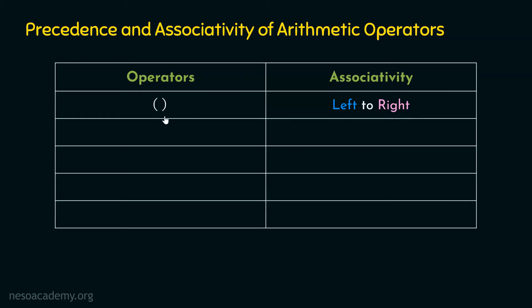Parentheses has the highest precedence among all the operators, which is why it appears in the first row. Its associativity is left to right, meaning that if we have more than one group of parentheses in an expression, the evaluation order will be from left to right. We read the expression left to right and evaluate each set of parentheses as we encounter it.